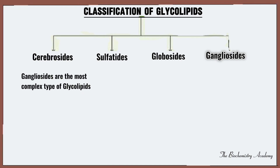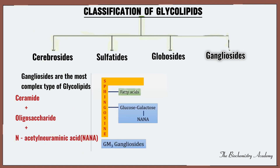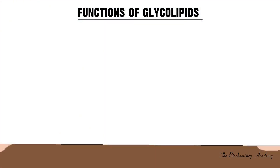The fourth classification of glycolipids is the gangliosides, which are the most complex type of glycolipids. They are composed of a ceramide plus an oligosaccharide plus an acetylneuraminic acid, also known as NANA. Examples of gangliosides are the GM3 and GM1 gangliosides.